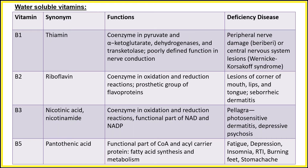Next are water-soluble vitamins. Vitamin B1 is also known as thiamine. Its function is as a coenzyme in pyruvate and alpha-ketoglutarate dehydrogenases and transketolase, and it has a poorly defined function in nerve conduction. Deficiency diseases include peripheral nerve damage, i.e., beriberi, or central nervous system lesions, i.e., Wernicke-Korsakoff syndrome.